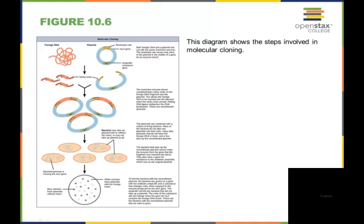You've got your sticky ends that are complementary here on your foreign DNA and on your plasmid. You have here an ampicillin resistance gene. This is your LacZ gene. The restriction enzymes leave the complementary sticky ends on the foreign DNA fragment and the plasmid. This allows the foreign DNA to be inserted into the plasmid when the sticky ends anneal. You'll add DNA ligase to reattach the DNA backbones. And now you have your recombinant plasmids.